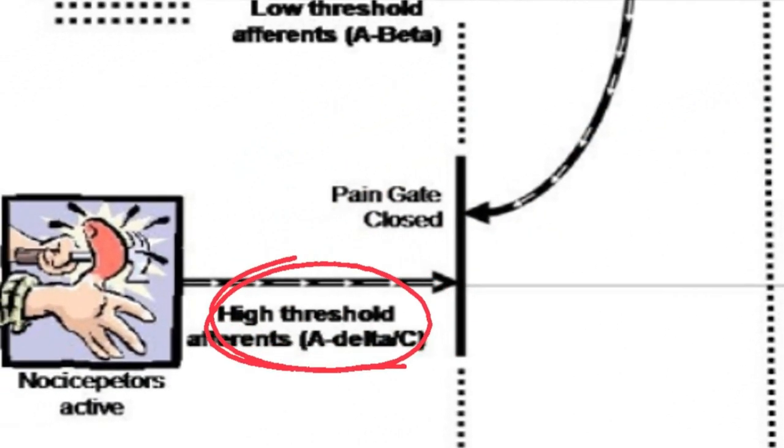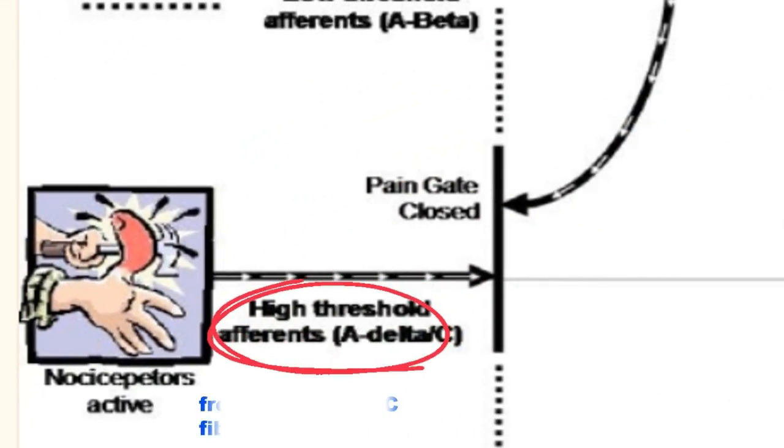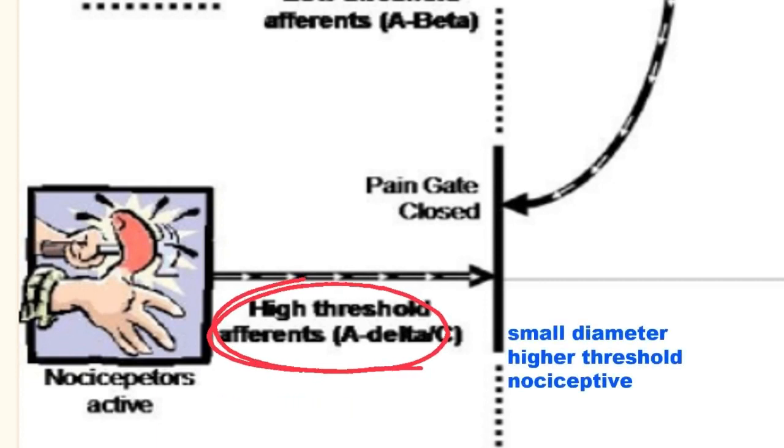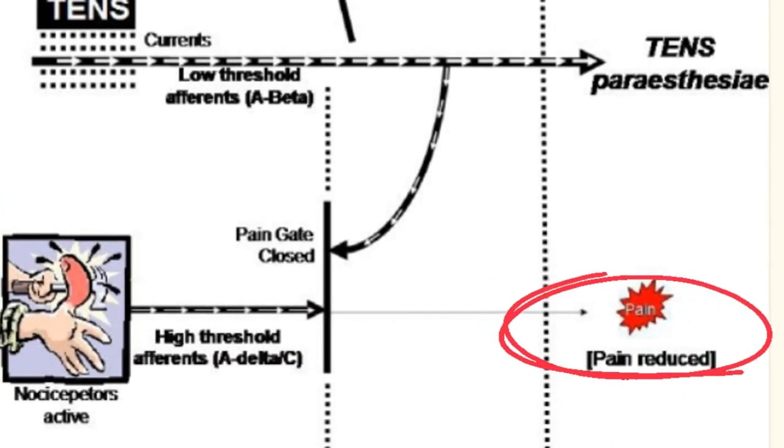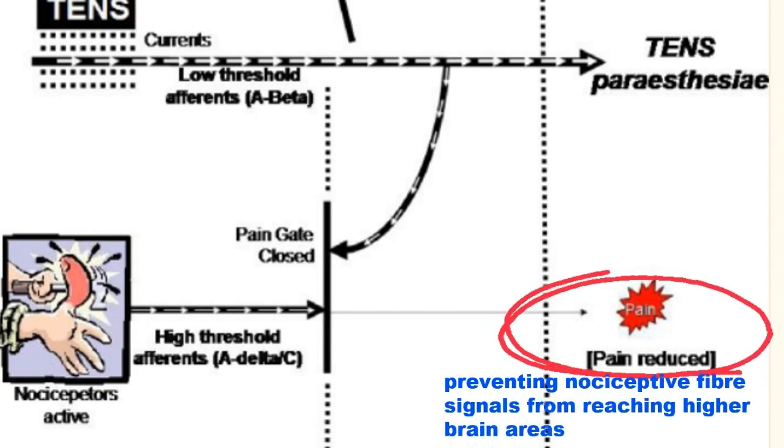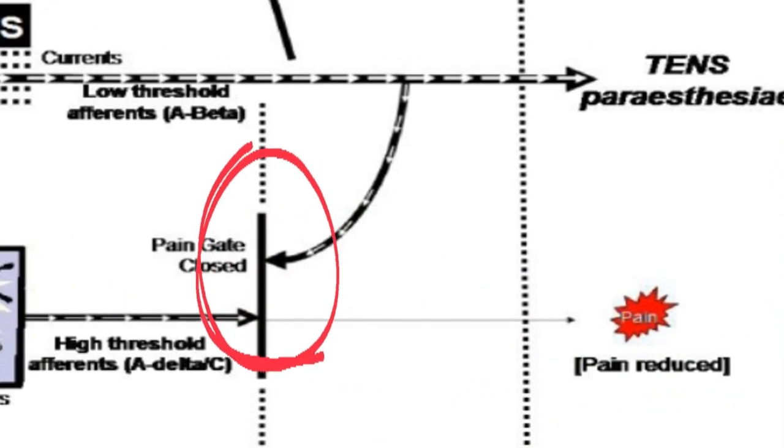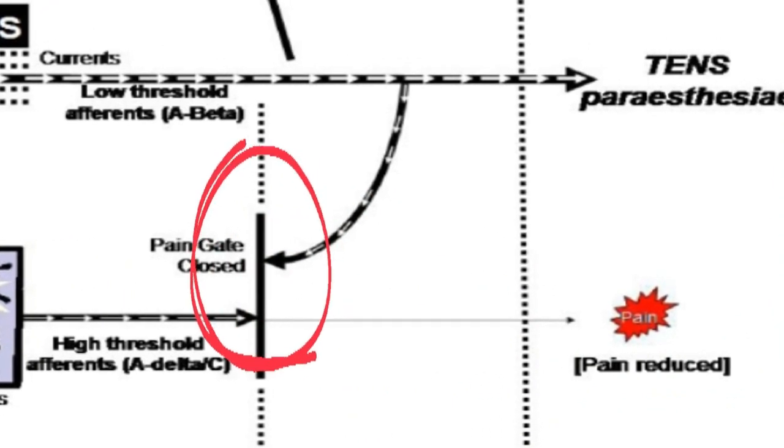From A-delta and C-fibers to the brain, both fibers are small diameter high threshold which is nociceptive, that is pain-related fibers. As a result, this would lessen pain by preventing nociceptive fiber signals from reaching higher brain areas. Thus, it is said that sensory stimulation of the A-beta nerve closes the gate to the signal being transmitted by the nociceptive A-delta and C fibers.